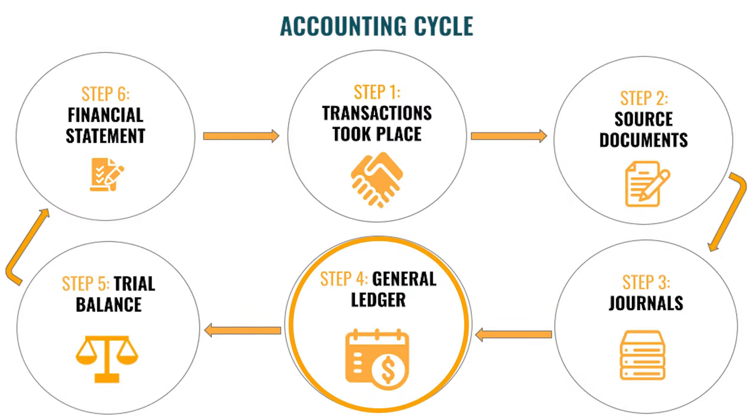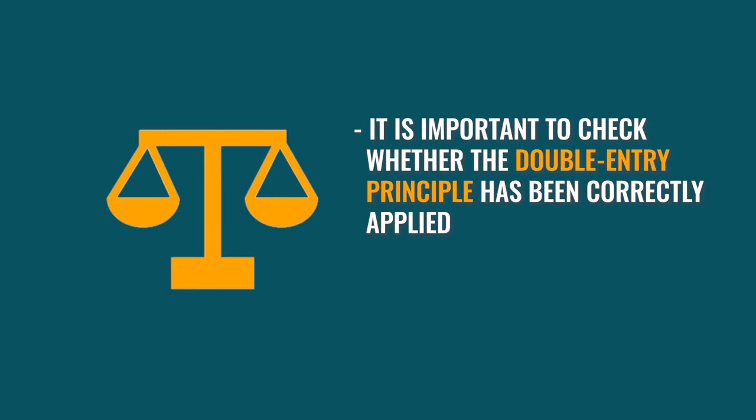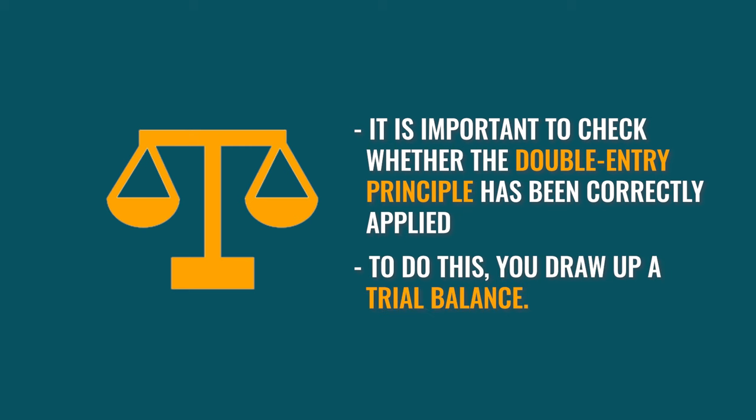Let's move on to Step 5 in the accounting cycle: the Trial Balance. When a General Ledger has been drawn up and it balances, it is important to check whether the double entry principle has been correctly applied and the accounts have been drawn up accurately. To do this, you draw up a Trial Balance.